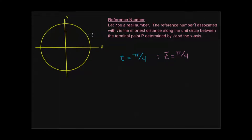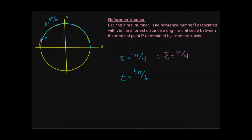Let's do a more complicated one — let's say t equals 5π/6, and we're not in the first quadrant this time. We know that 6π/6 equals π, and π is one half of the way around the circle. So 5π/6 is just short of that. I'm going to go almost all the way around my half circle and stop right here. So this is my point p, and this is t equals 5π/6. I want the shortest distance between p and the x-axis, and it's easy to see that distance is this arc going forward — not back the way I came.